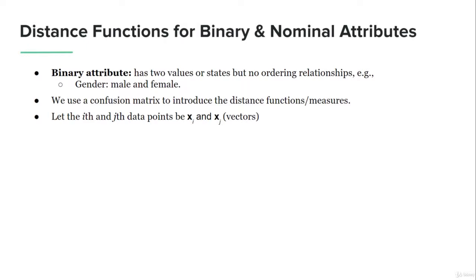Whenever we talk about categories, binary attributes, or nominal data, we use the one feature they have to offer: frequency. We use a confusion matrix to introduce different distance functions and populate it with the frequency of these values. Imagine we have two features i and j in a data set, each with values that are either 0 or 1. We populate the confusion matrix with counts: how many times both are 1, how many times one is 1 and the other 0, and vice versa.